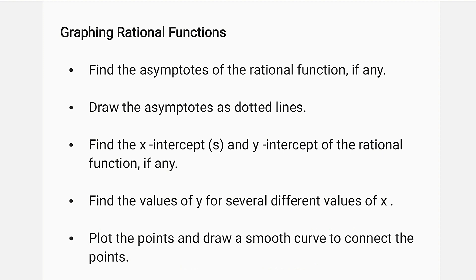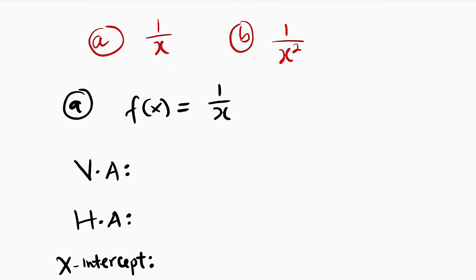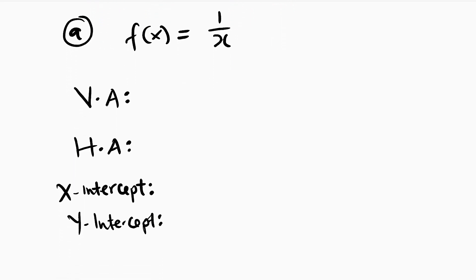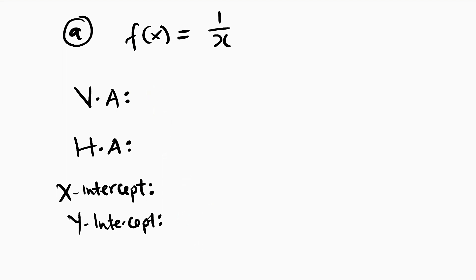Let us start with y = 1/x. For this function we need to find four things: the vertical asymptote, horizontal asymptote, x and y intercepts, and then plot points to construct the graph. To find the vertical asymptote, we set the denominator equal to 0. Our denominator is x, therefore x = 0 is our vertical asymptote.